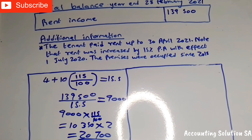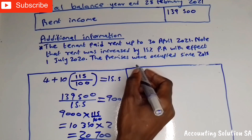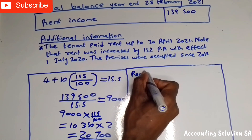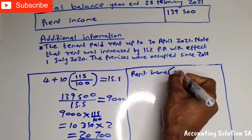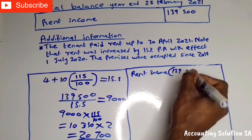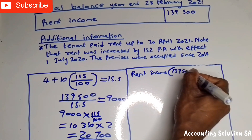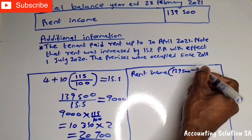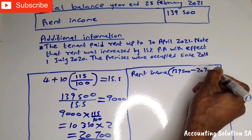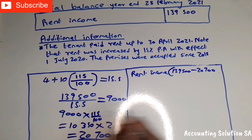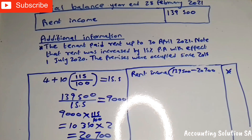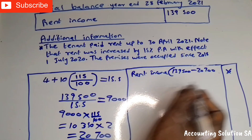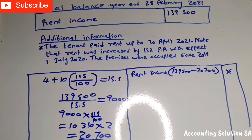When you go to the income statement, you say rent income, then open a bracket: R139,500 minus R20,700, and the answer you get you put on the other side. Very simple, guys — very simple. Please make sure that you follow my channel; I'm going to upload more and more videos to assist you through your examination.